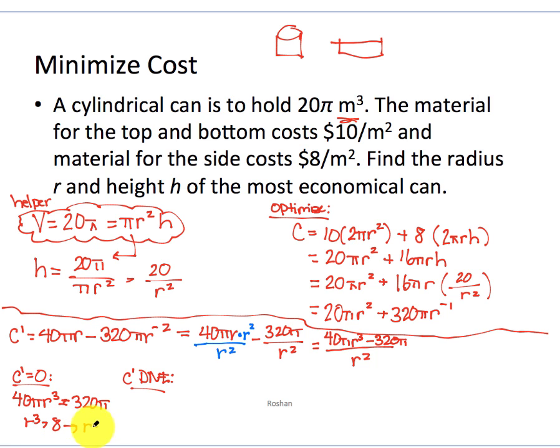And it does not exist when the denominator equals 0. When r² equals 0. When the radius is 0. That answer actually doesn't make sense at all. If the radius was 0, I wouldn't have a can in the first place. So we can throw that one out. And our only answer is going to be when the radius is 2. That is going to minimize the cost of this thing.